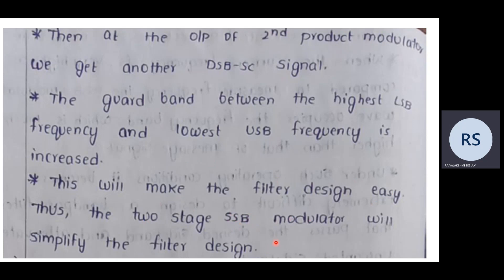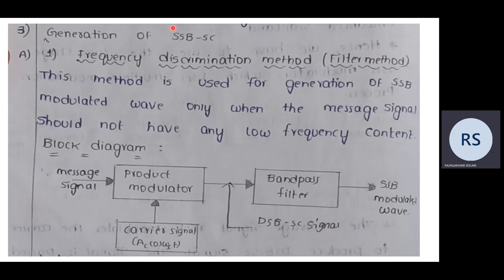The next generation method for SSB-SC is the filter method, also called the frequency discrimination method. This method works only when the message signal does not have any low-frequency content. If the message signal has low-frequency content, it is not possible to generate SSB-SC using this filter method. This is an important condition for applying the filter method.